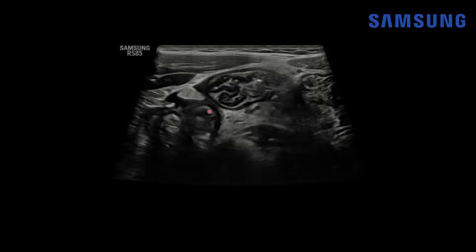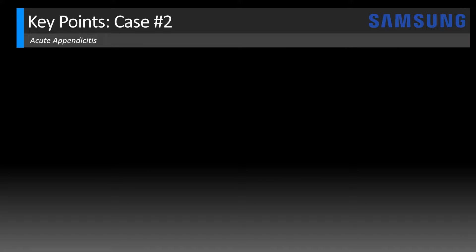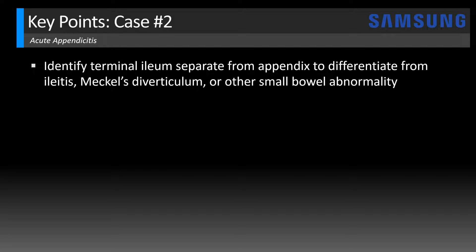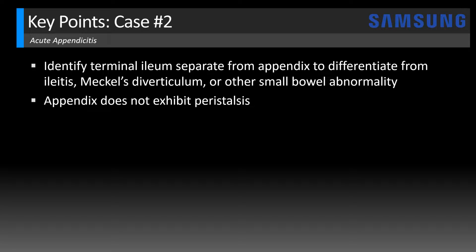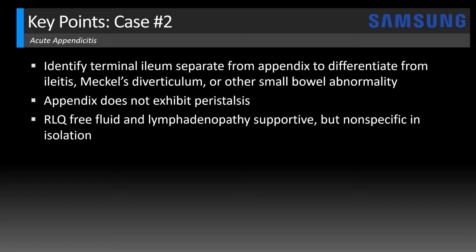It's important to identify the cecal apex origin of the appendix separate from the terminal ileum to avoid confusion. Key points for case two: identifying the terminal ileum separately helps differentiate from other abnormalities like iliitis, Meckel's diverticulum — a congenital diverticulum typically arising from the distal ileum that can mimic the appendix — and other small bowel abnormalities. Another clue is that the appendix does not exhibit peristalsis, so a peristalsing tubular structure is probably adjacent bowel. Right lower quadrant free fluid and lymphadenopathy are supportive but non-specific.